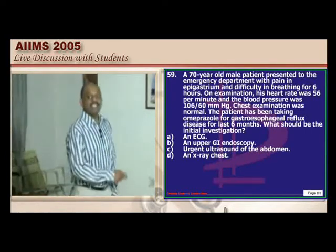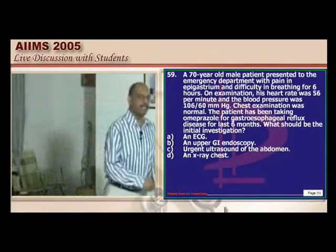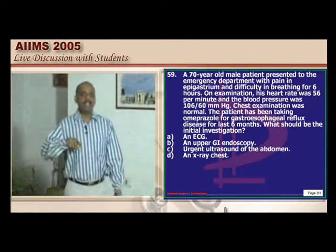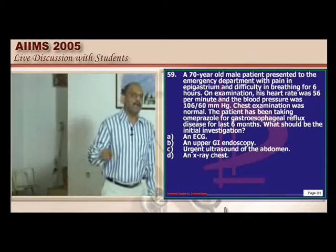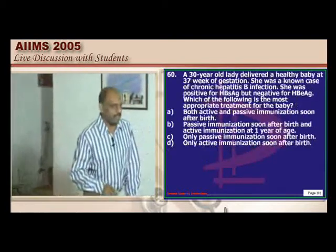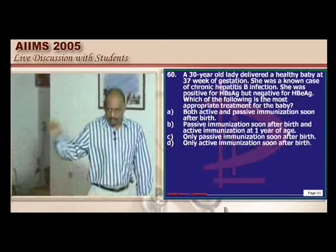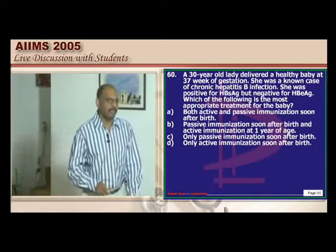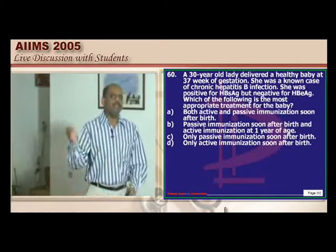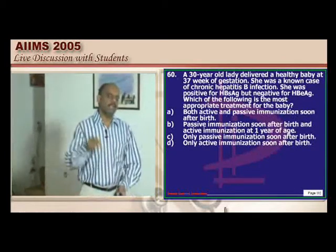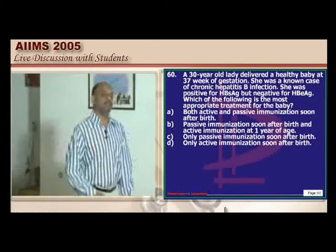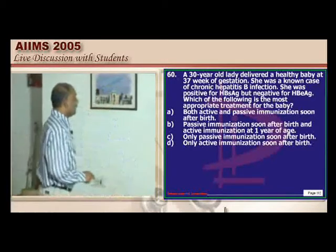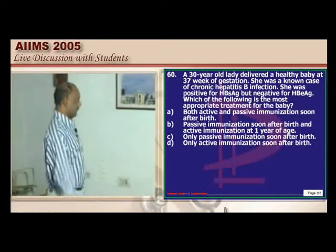Typical right coronary artery occlusion leads to development of AV nodal blocks, severe right ventricular failure, and hypotension — all these problems will appear, which is why ECG is the next investigation of choice.